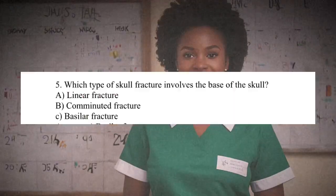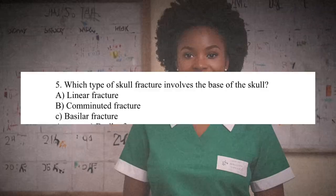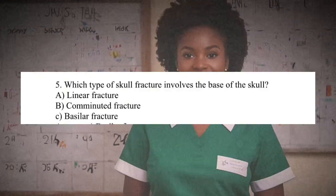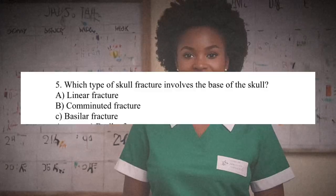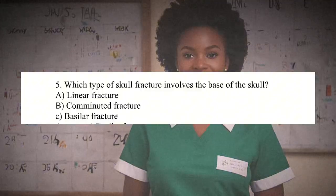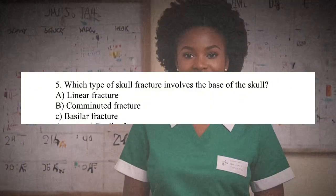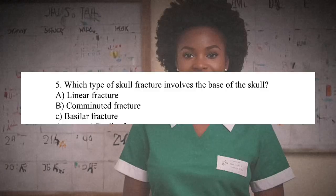Question 5: Which type of skull fracture involves the base of the skull? A. Linear fracture. B. Comminuted fracture. C. Basilar fracture. Answer: C. Basilar fracture. Rationale: A basilar fracture involves the base of the skull.